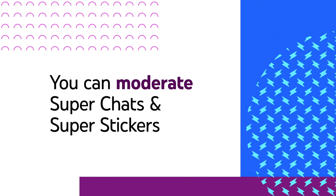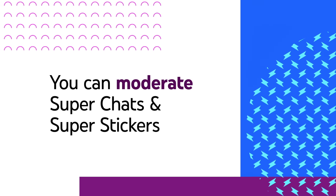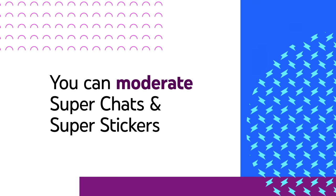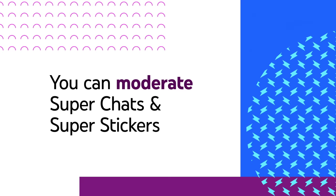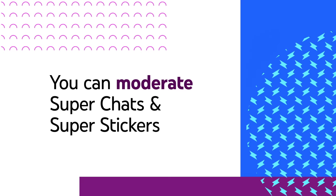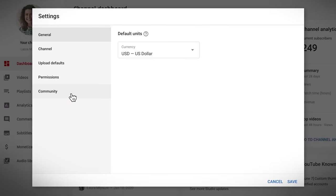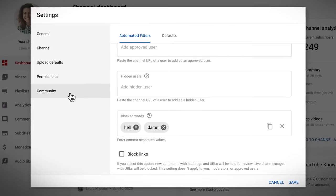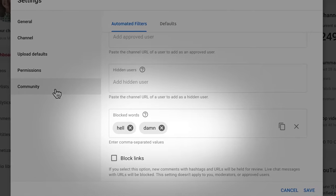Here's how you can manage them while you're live. While live, you can moderate Super Chat and Super Stickers much in the same way that you and your moderators moderate regular live chat messages. To prevent potentially inappropriate messages, use your channel's blocked words list. Timed out, banned, and blocked users cannot purchase Super Chats or Super Stickers.